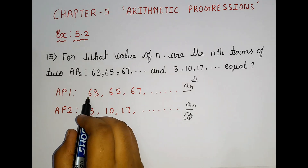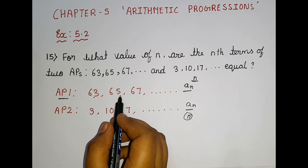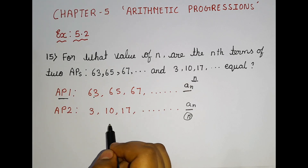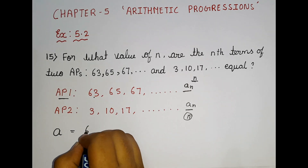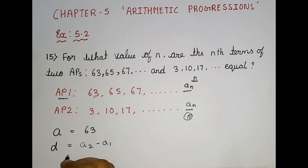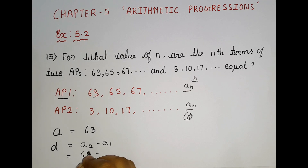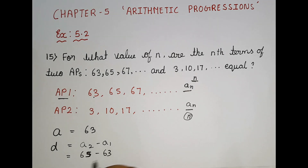Let's check AP number 1: 63, 65, 67. Here a₁ = 63 and d = a₂ minus a₁ = 65 minus 63 = 2. So the d value is 2. Now we have the a value and the d value.